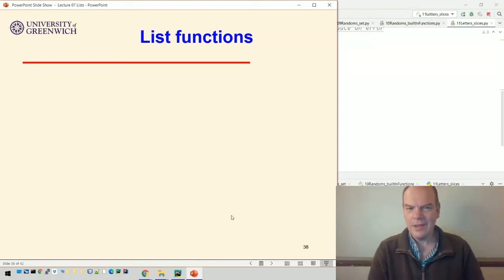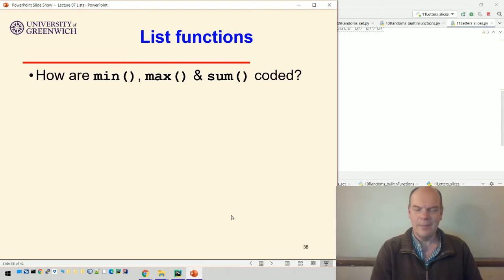Okay, so just to finish off, I think it's worth thinking about how these list functions like min and max and sum, how are they actually coded? Because you may start to think, okay, I can get the min of this list by just asking for min back. How does that actually work?